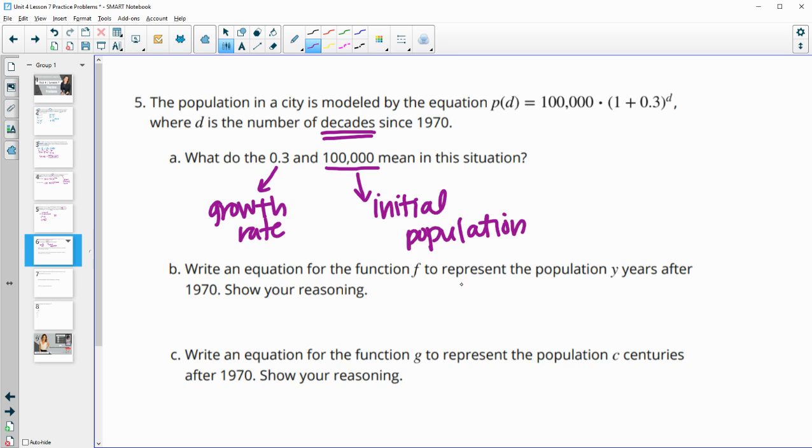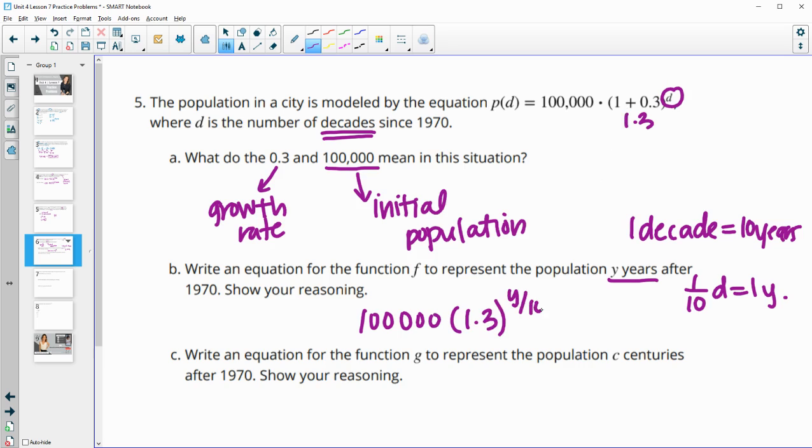Write an equation for the function to represent the population in years after 1970. This one is in decades. One decade equals 10 years, so 1/10 of a decade equals one year. Now our exponent is going to need to be our time divided by 10. So 100,000 times 1.3, which is just adding this together, to the year divided by 10.